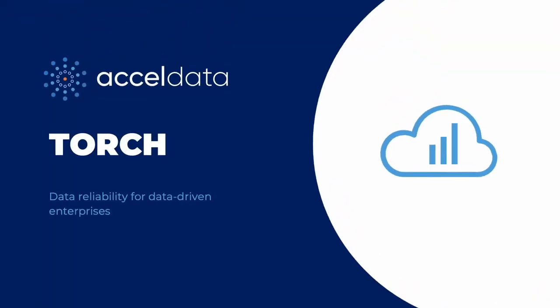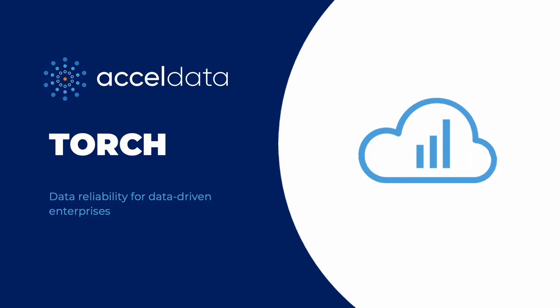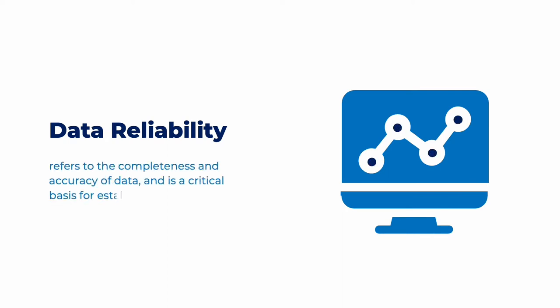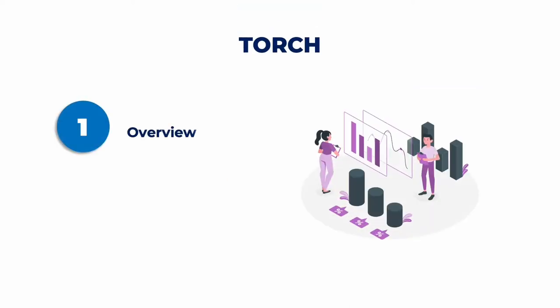Let's discuss AccelData's Torch product. Since Torch's main focus is data reliability, we need to understand what that means. Data reliability refers to the completeness and accuracy of data, which is the foundation for establishing data confidence within any data-driven organization. In this video, let's go through Torch's overview and its overall architecture.